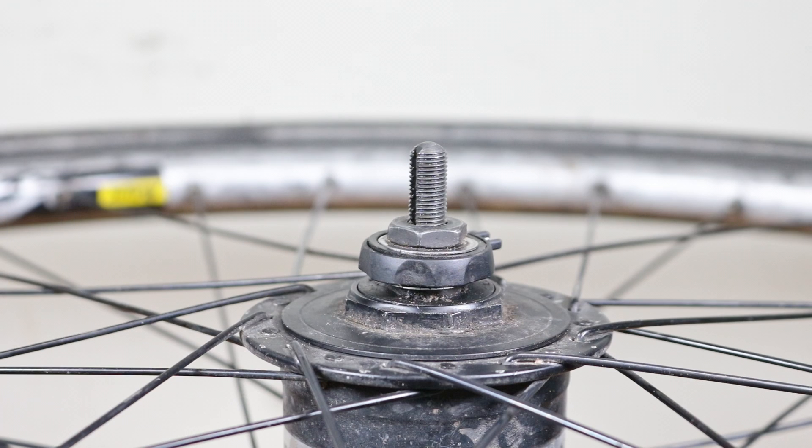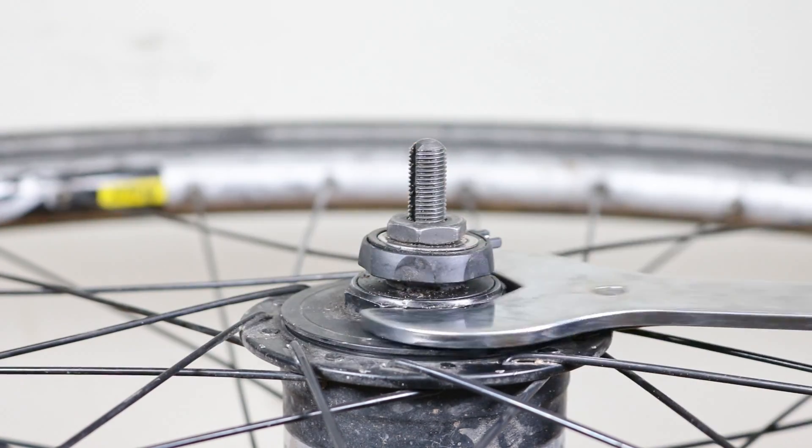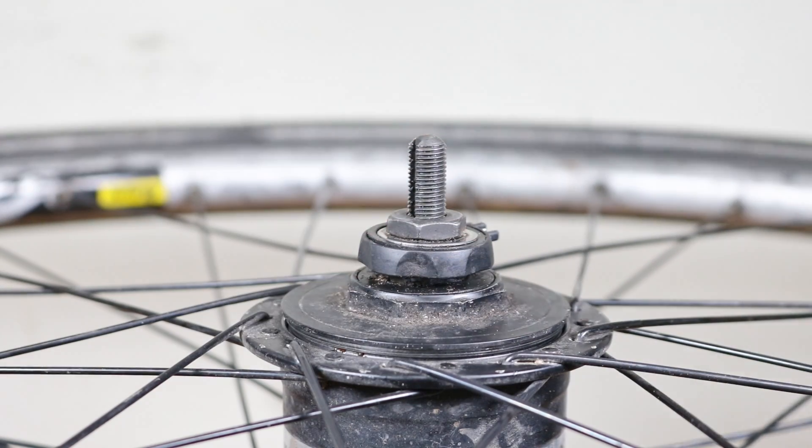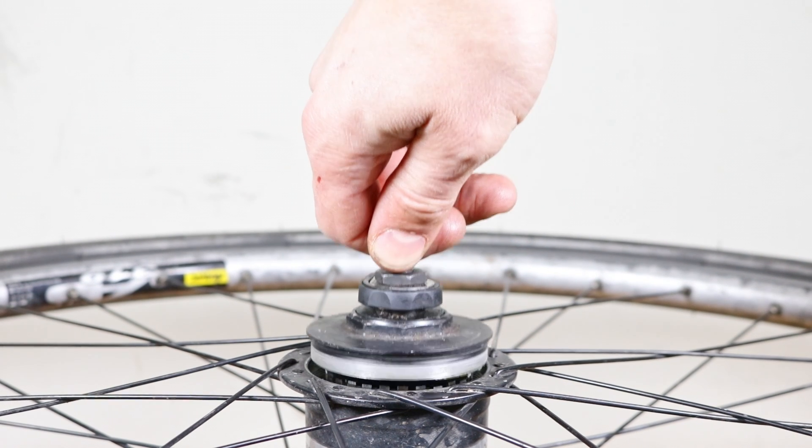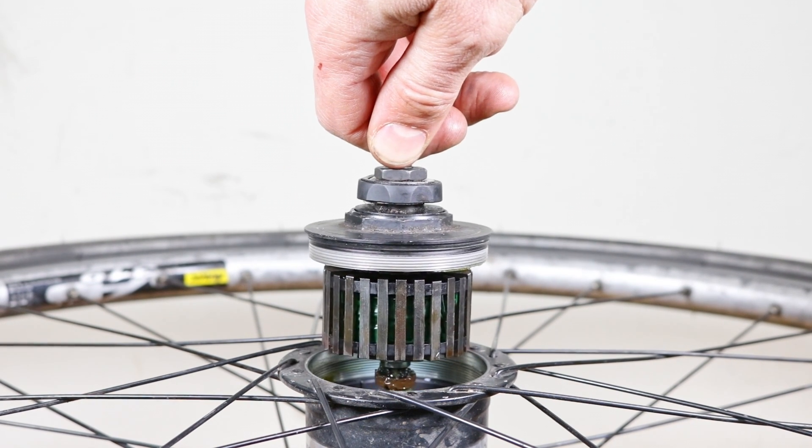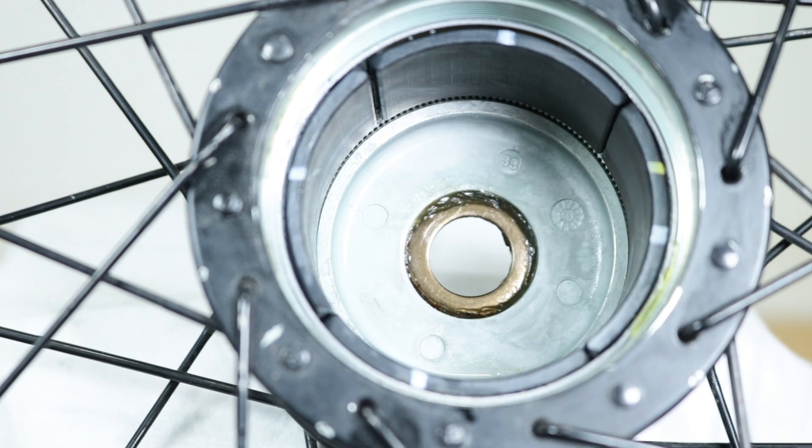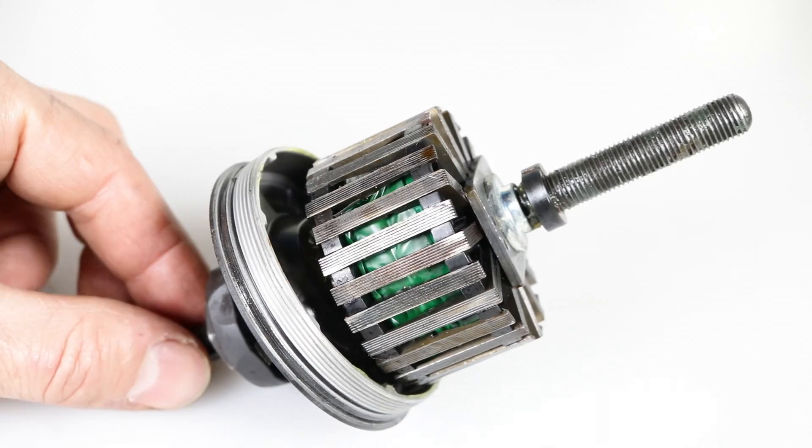Use a magnetic tool to grab all the 12 bearings from the cup. Work on the drive side. Use a 36mm headset spanner to loosen the armature cover by turning it anti-clockwise. Take out the axle and armature from the hub shell and set them aside. Clean the magnets in the hub wheel using isopropyl alcohol and a cloth. Spray isopropyl alcohol on a cloth and wipe down the armature.